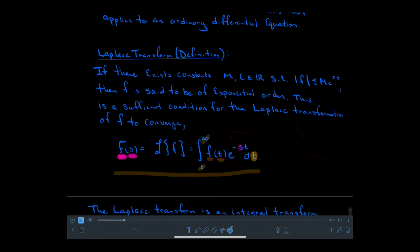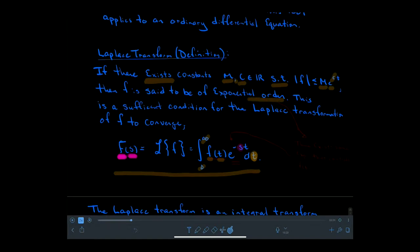You might ask yourself: since this is an improper integral, when can we expect it to exist? This improper integral exists so long as there are constants m and c such that f can be bounded above in magnitude by m times e to the ct. That means f is of exponential order — there exists some exponential that can control, for all time, the size of our data f.